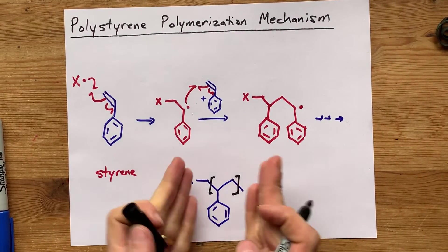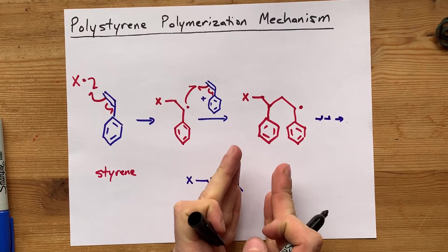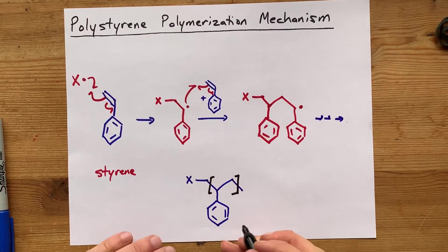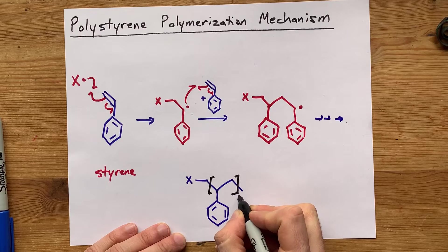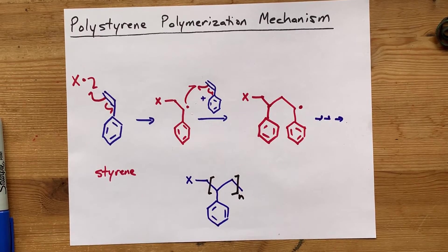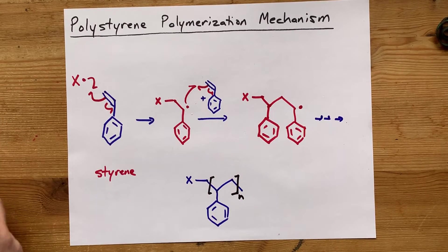This here is the repeating unit. This could get copied and pasted to here and to here and to here. And you'd end up with, I don't know, how many of those. We usually put an N to show that there's N many of those in the chain.